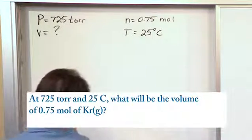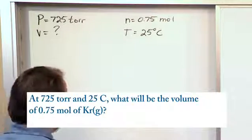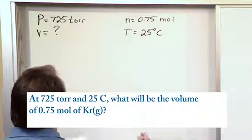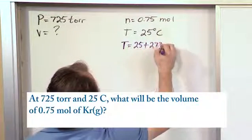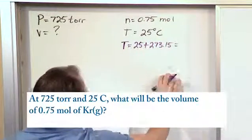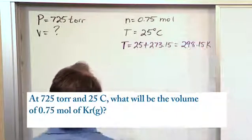Now we know right away that we cannot use Celsius in these calculations, but you're almost always going to be given Celsius in a problem because they just want you to convert. So the temperature really is 25 plus 273.15, and when you add those up you get 298.15 Kelvin. That's what you want to use.